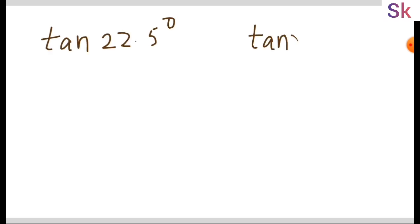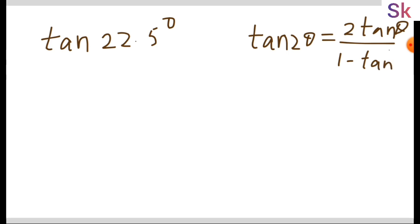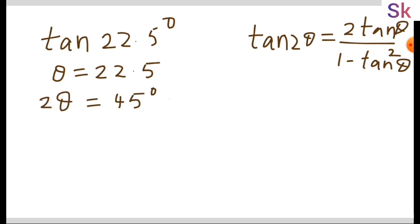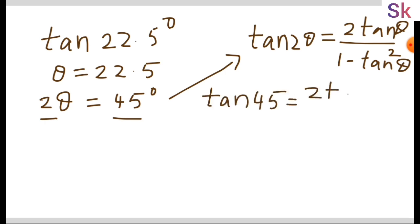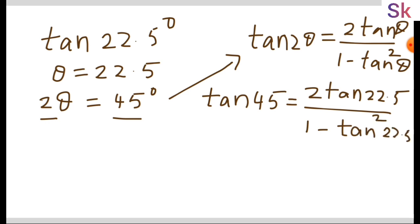Now I am going to show the value of tan 22.5 degrees. The formula for tan 2θ is 2 tan θ over (1 minus tan² θ). Let's take θ as 22.5; then 2θ equals 45 degrees. Substituting, tan 45 equals 2 tan 22.5 over (1 minus tan² 22.5). Since tan 45 equals 1, the left-hand side is 1.